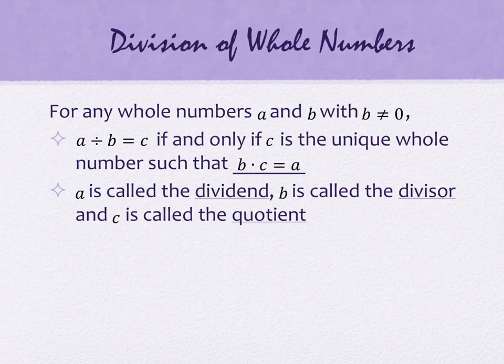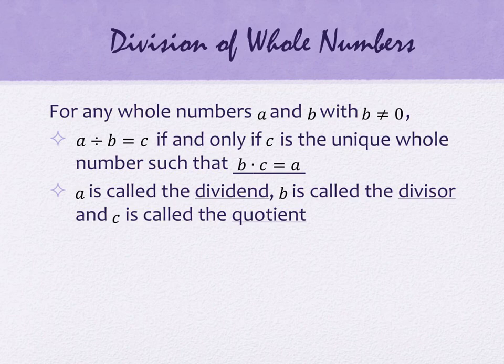This one mirrors a lot of how we described subtraction. For any whole numbers A and B, with B not equal to zero, when we say A divided by B equals C, this is if and only if C is the unique whole number such that B times C is equal to A. A is called the dividend, B is called the divisor, and C is called the quotient.